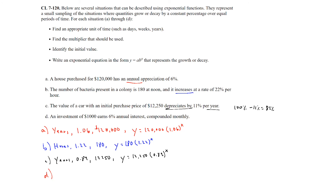Part D: An investment of $1,000 earns 6% annual interest compounded monthly. Time unit is months. The monthly rate is 0.06 divided by 12 equals 0.005, so the multiplier is 1.005. Initial value is $1,000. Equation: y equals 1,000 times 1.005 raised to the x power.